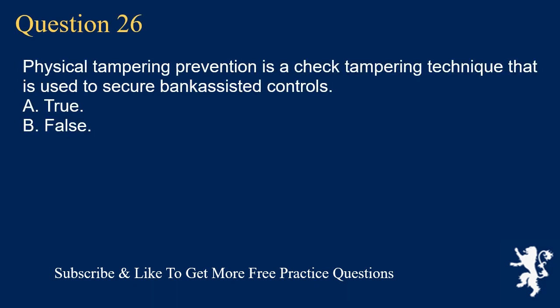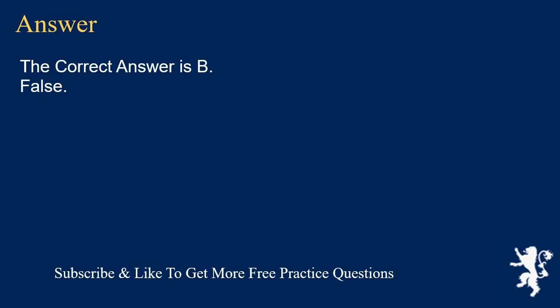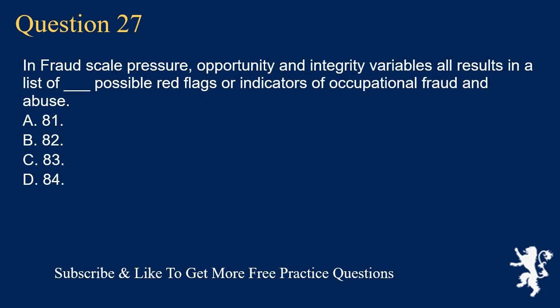Question 26: Physical tampering prevention is a check tampering technique that is used to secure bank-assisted controls. A. True. B. False. The correct answer is B. False.